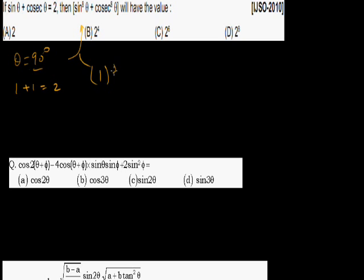If sin θ plus cosec θ = 2, then the value of sin⁸θ plus cosec⁸θ is what? Since sin θ plus cosec θ = 2, I can say θ = 90°. Sine 90° is 1, cosec 90° is 1, and 1 plus 1 = 2 — confirmed. Put θ = 90°: sin⁸θ plus cosec⁸θ = 1⁸ plus 1⁸ = 1 plus 1 = 2. That's a simpler way to solve the problem.